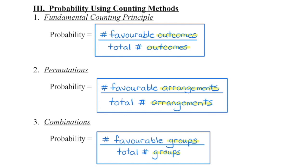We're now going to combine what we know about probability with what we know about different counting methods. For a fundamental counting principle problem, draw out your spaces: favorable outcomes in the numerator divided by total possible outcomes in the denominator. For permutations, set up favorable arrangements over total arrangements. For combinations, determine the number of favorable groups in the numerator over total groups in the denominator.